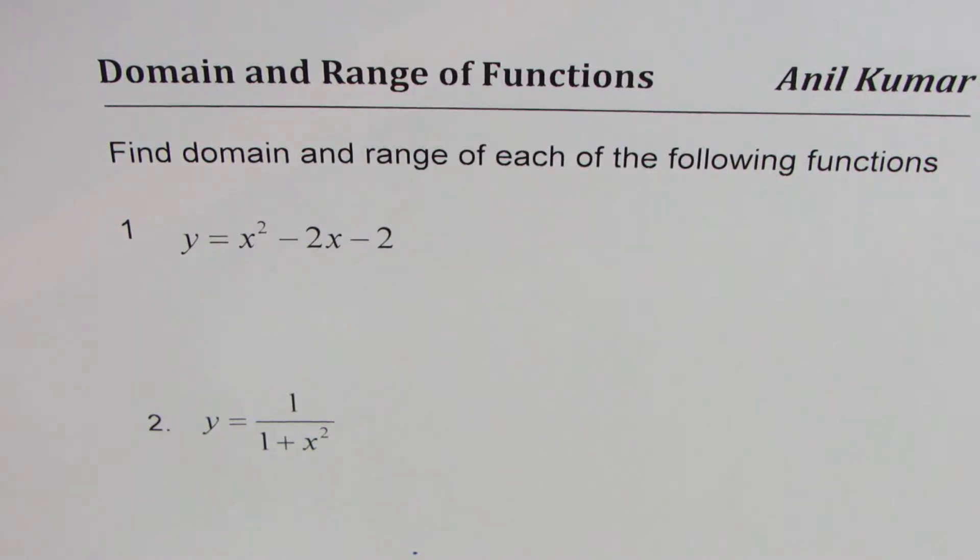First one is y equals x squared minus 2x minus 2. And the second one is y equals 1 over 1 plus x squared.